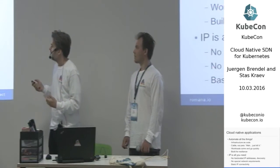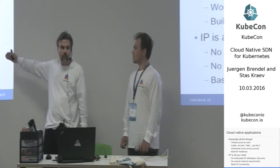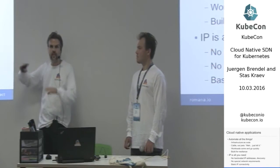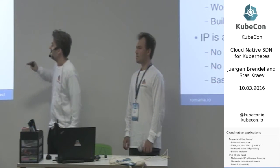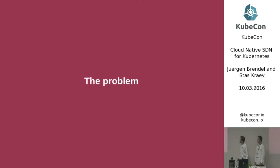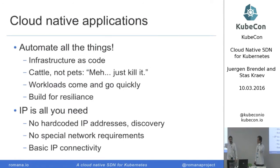As far as the network is concerned, that's really all we want now: basic IP connectivity. That's all — no special network features. We discover our addresses, we don't need to hard-code them. So what's the problem? This should make things simple, shouldn't it? It really should simplify things.